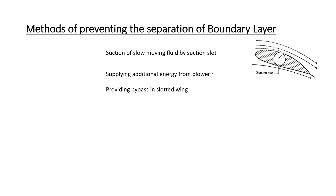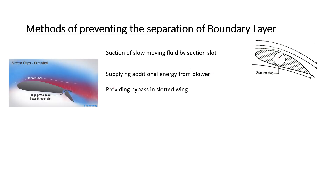You have a slotted wing bypass — slotted flaps. Here you have a high pressure layer. You can rotate it; if you rotate it, you have a further velocity added.